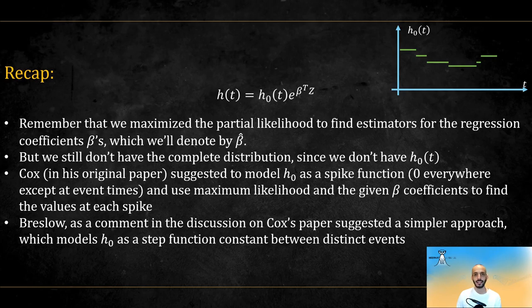Remember that we maximize the partial likelihood to find estimators for the regression coefficients betas, which we'll denote by beta hat, but we still don't have the complete distribution since we don't have H0. Cox, in his original paper, suggested to model H0 as a spike function, meaning zero everywhere except at event times, and to use maximum likelihood and the given beta hat estimators to find values at each spike.